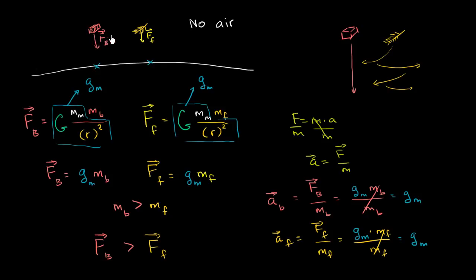Despite one having a larger mass: the larger mass creates a larger gravitational attraction to the moon, but because of its greater mass, that attraction gives it the same acceleration as something with a smaller mass. So any mass at the same height on the surface of the moon would experience the same acceleration.